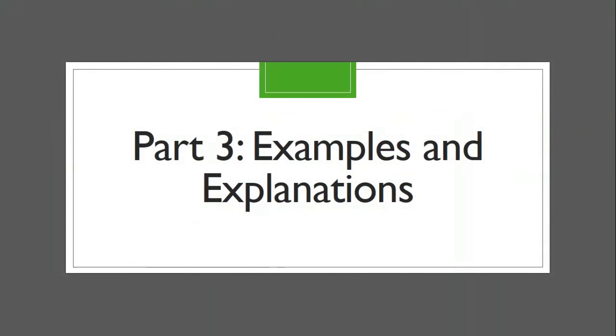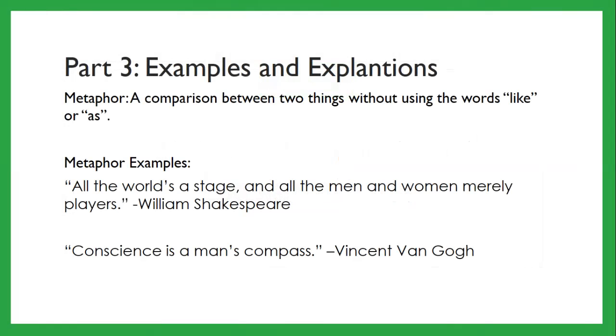So in this section, examples and explanations, I'll go over some of the answers more in depth. Usually not the spelling unless there's a reason to. And we will do a little more in-depth knowledge about some of the answers. So the first one, metaphor, a comparison between two things without using the words like or as. Metaphor examples: all the world's a stage, and all of the men and women merely players by William Shakespeare. And another one is Conscience is A Man's Compass by Vincent van Gogh.